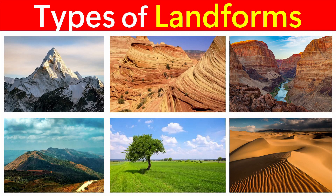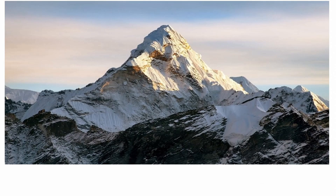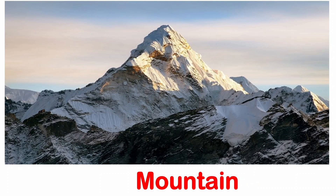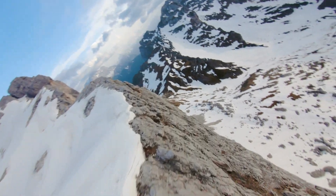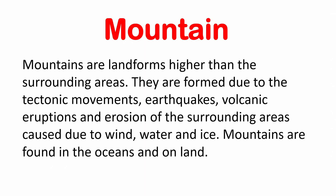Types of Landforms. Mountain: Mountains are landforms higher than the surrounding areas. They are formed due to tectonic movements, earthquakes, volcanic eruption, and erosion of the surrounding areas caused by wind, water, and ice. Mountains are found in the oceans and on land.